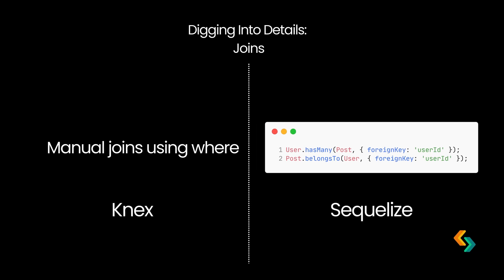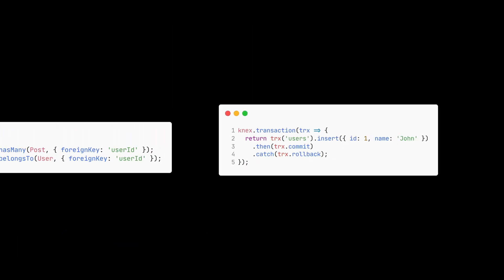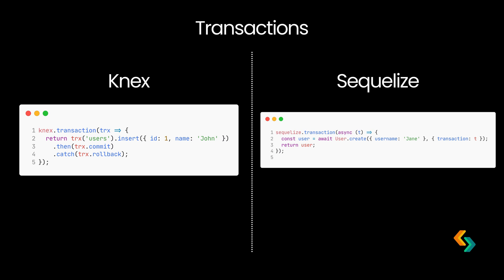Ready to dig a bit deeper? Let's talk about some advanced aspects like joins, transactions, and migrations. Joins: with Knex, creating joins means manually writing out each condition, which gives you a lot of flexibility. In Sequelize, joins happen automatically through relationships, like belongs-to and has-many. Here's an example of how you'd set up a one-to-many relationship in Sequelize — two lines of code, and Sequelize does the rest. If you need custom joins, though, Knex lets you define exactly how they work. Transactions: both tools support transactions, but the approach differs. Knex's transactions require a bit more configuration but offer lower-level control. Sequelize abstracts the transaction slightly more. Think about the complexity of your project and how much control you need.